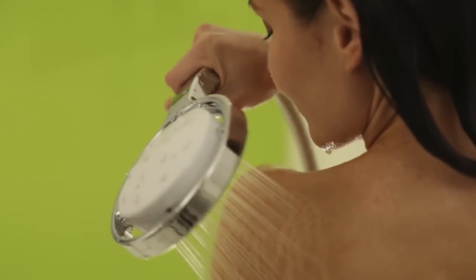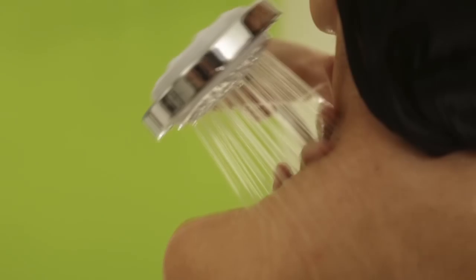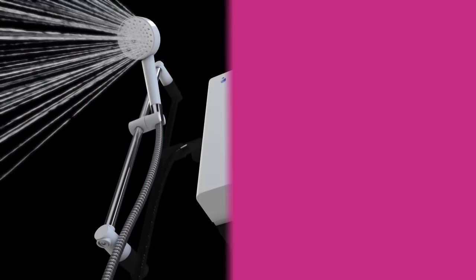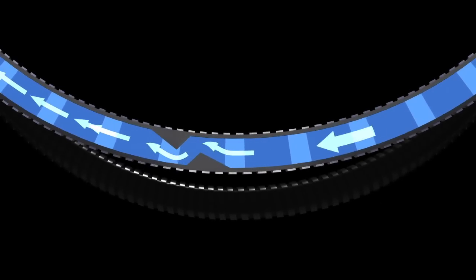SensiFlow is a unique safety feature which protects the user from getting showered with very hot water if there's a change in the water pressure caused by a blockage, for example, if the shower hose kinks or the shower head scales up.